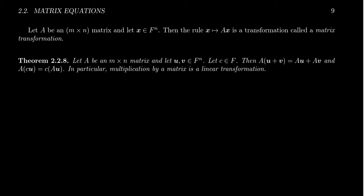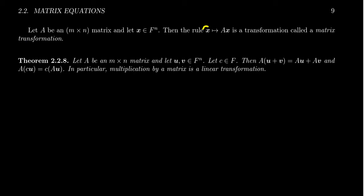The reason why we care so much about matrices and linear algebra is that matrices encode linear transformations. Given a matrix A which is m by n — m many rows and n many columns — and a vector x inside of Fⁿ, the product A times x is well defined. Using this matrix multiplication we can define what we call a matrix transformation: there's a rule that given any input vector we produce an output vector.